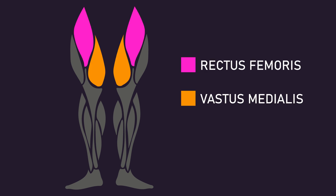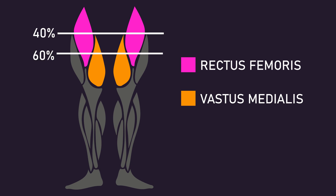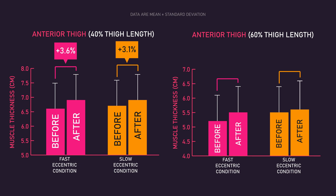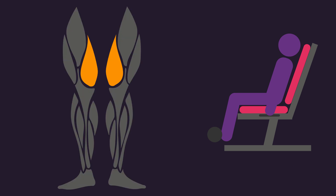Thickness of the anterior thigh — which included the rectus femoris and vastus medialis muscles — was measured for both legs at 40% and 60% of the thigh length. Increases at 40% were similar between the fast and slow eccentric conditions. However, increases at 60% of the anterior thigh were statistically greater for the fast eccentric condition, suggesting that a 1-second eccentric duration on the knee extension preferentially stimulates the vastus medialis and rectus femoris at 60% of the thigh length, supporting the idea that different repetition tempos may induce different regional growth.